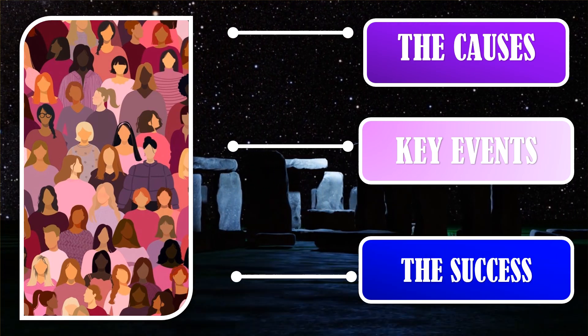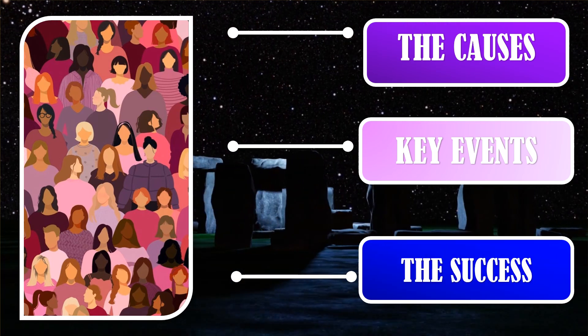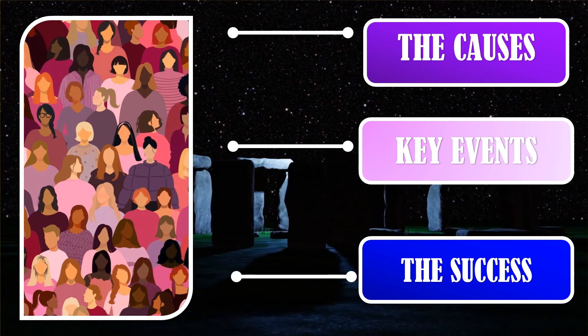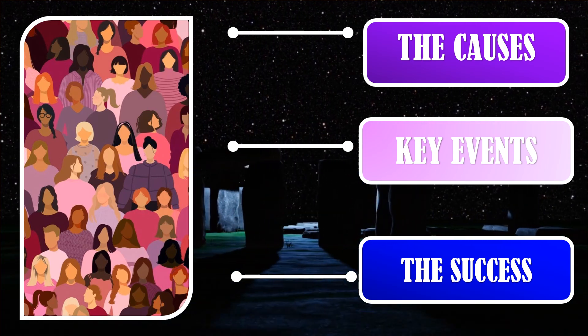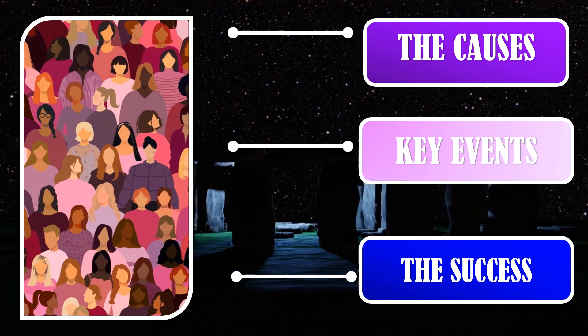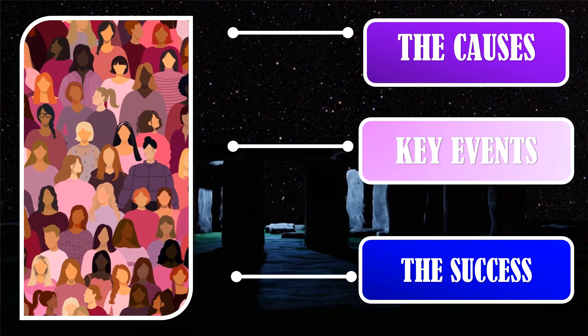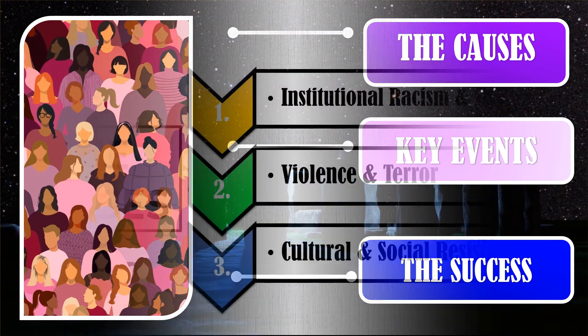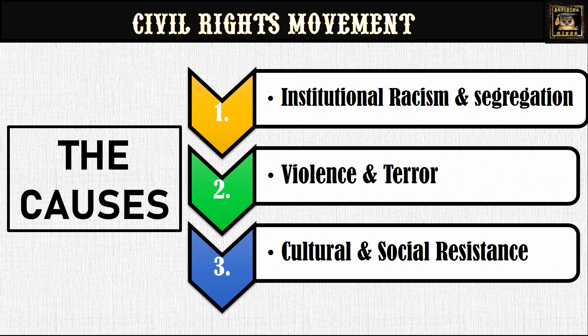In this video, we are going to talk about the causes that led to this movement, the key events — six in total — and what was the end result of this movement. There were three major causes that led to the civil rights movement: the first was institutional racism and segregation, the second was violence and terror, and the third was cultural and social resistance. Now let us have a look at each of them in detail.